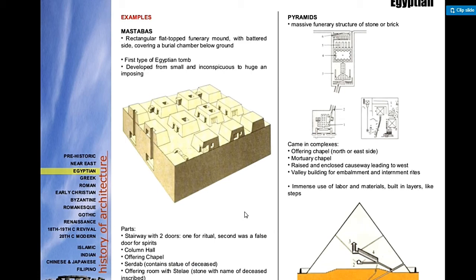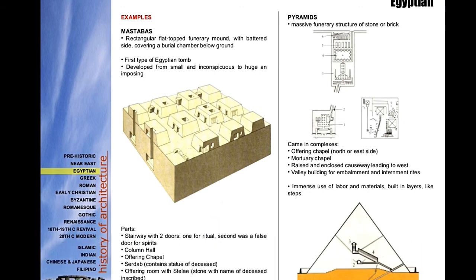The mastaba was the tomb used for palace officials and high-ranking military officers in Egypt. The pyramids, on the other hand, were the burial places for kings, queens, and even the children of pharaohs.